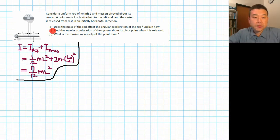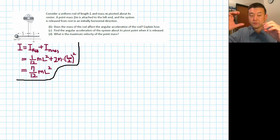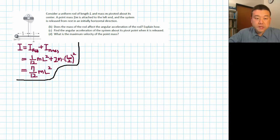It says, find the angular acceleration of the system about its pivot point when it is released. So I hope everyone has this intuition that if you let go of this, it will rotate because of the 2M mass on the side. So let's start out with a free body diagram. This line represents the rod.